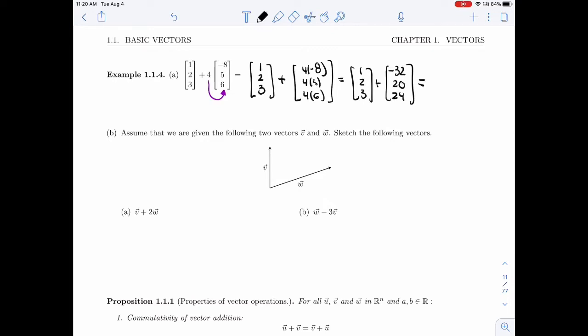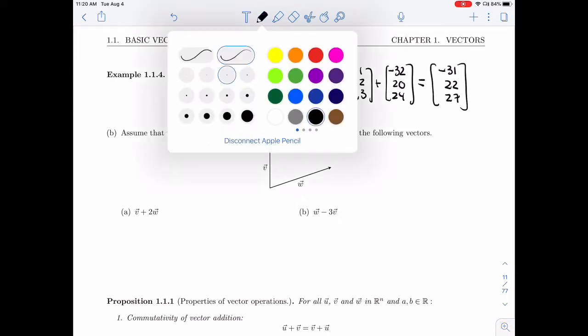And then I just add the corresponding entries. So 1 minus 32 is -31, 2 plus 20 is 22, 3 plus 24 is 27. And here is my answer.